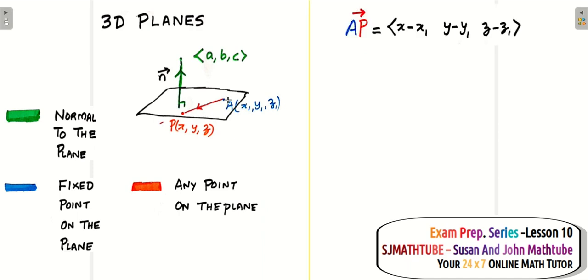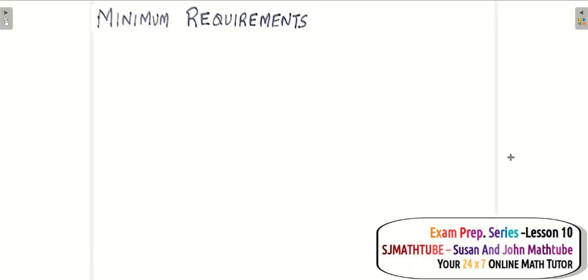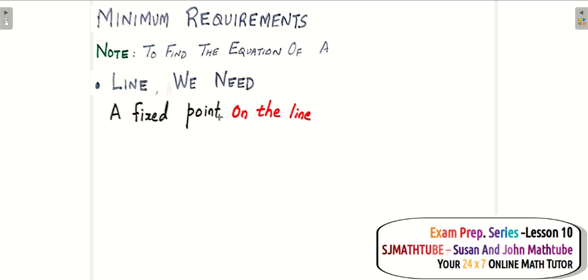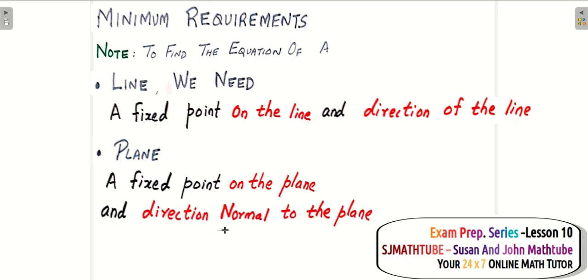The derivation is simple. AP is a vector on the plane, that is (x − x1, y − y1, z − z1). N is the normal vector, and AP and N are perpendicular. If they are perpendicular, the dot product is 0. This gives the equation of a plane. So to write the equation of a plane, all you need is the normal direction and one fixed point. The equation is: a(x − x1) + b(y − y1) + c(z − z1) = 0. To find the equation of a line we need a fixed point and the direction of the line; to find the equation of a plane we need a fixed point and the direction normal to the plane.